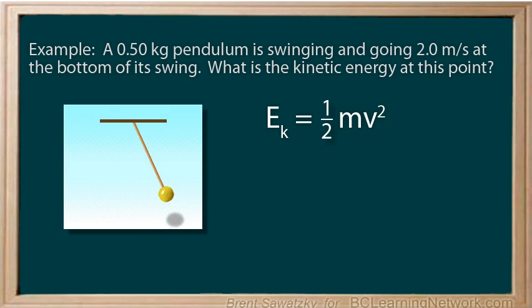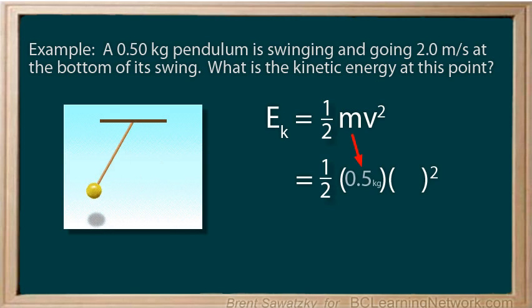We replace the m and the v with brackets, and then we put in our values. The mass is 0.5 kilograms. The velocity is 2 meters per second, and we're ready to calculate. And we find that EK equals one.